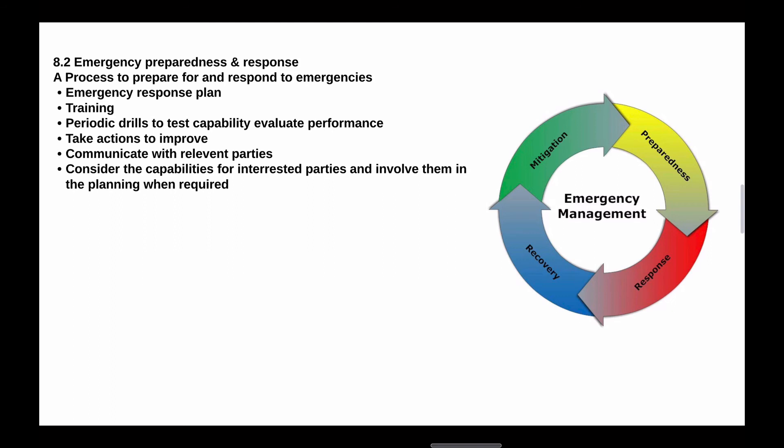Within Clause 8.2, they want you to develop a process where you have an emergency response plan, where people are trained, and you have periodic drills to test the capability and evaluate performance. You need to take actions to continually improve your emergency plan. It needs to be communicated to relevant parties, and you need to consider the capabilities of interested parties and involve them in planning.